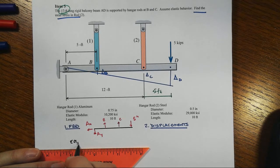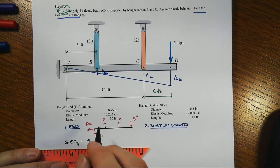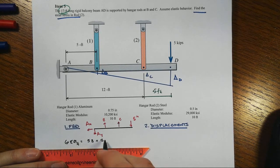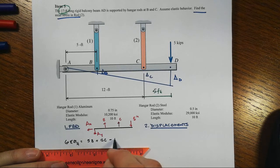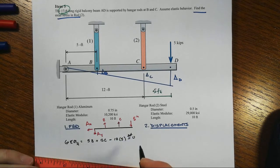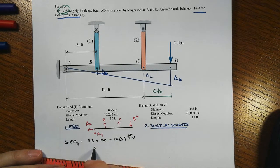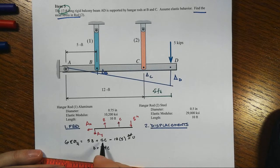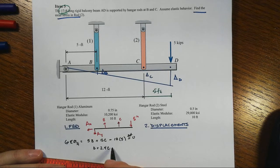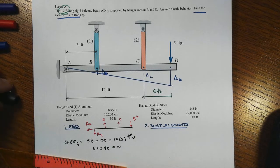We can sum moments about point A. Let's take counterclockwise positive. And we'll have 5 feet times B plus 12 feet times C minus then 17 feet times the 5-kip load, set it equal to zero. Note that if we divide through by 5 here, then we'll get that B plus 2.4 times C, because that's 12 divided by 5, equals 17. The 5s cancel out. Take the 17 to the other side. And that will be important and useful for us in just a bit.